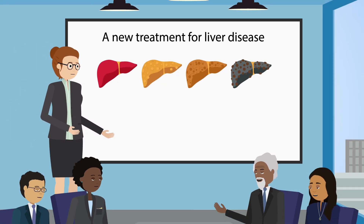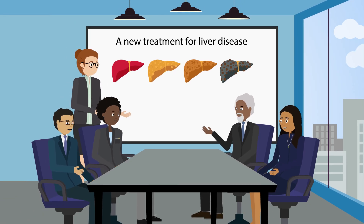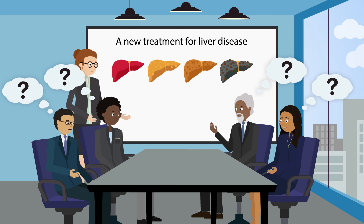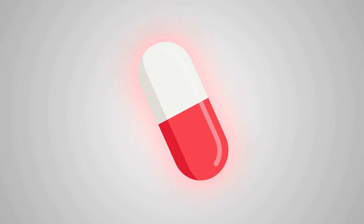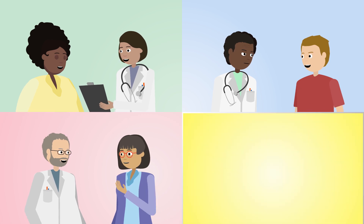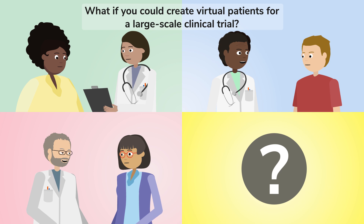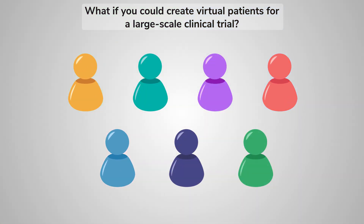How does the head of clinical trials at a global pharmaceutical company with a new drug to treat liver disease make the decision as to whether to embark on a Phase 3 trial? The data collected in Phase 2 is promising but more conclusive evidence is required before embarking on an expensive and time-consuming Phase 3 trial. What if you could create a large-scale extended clinical trial comprising virtual patients with all the characteristics of real-world patients?